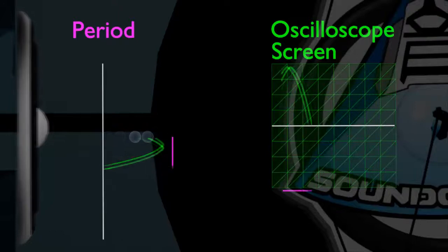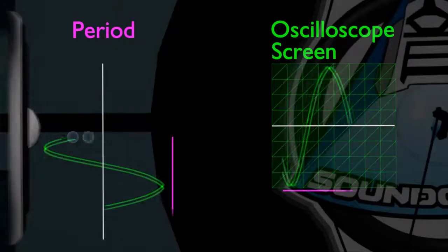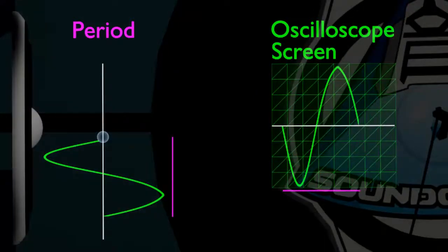Third, the time it takes for a molecule to displace forward and backward to the equilibrium position one time is known as the period or cycle, and it is measured in seconds. Period is represented by the letter T.